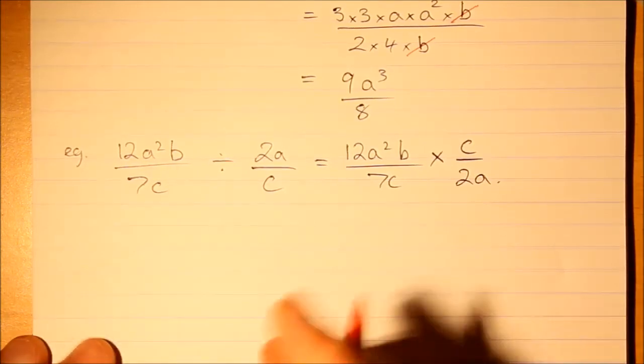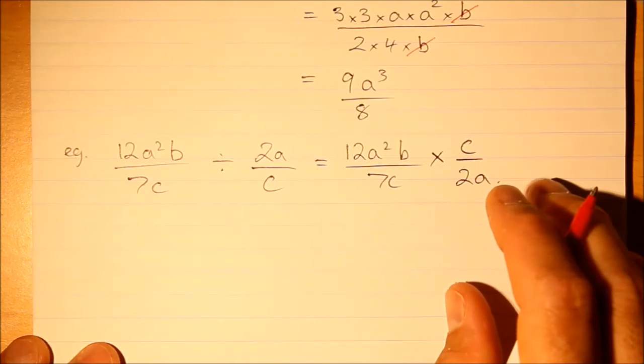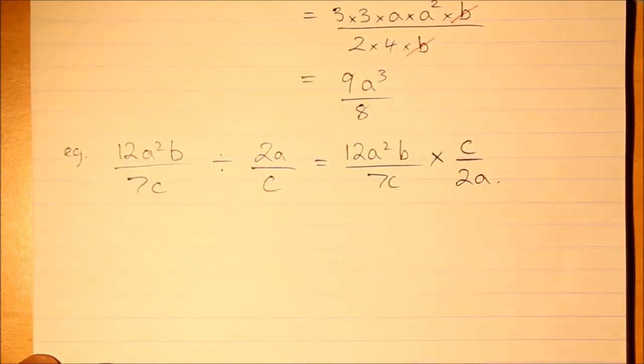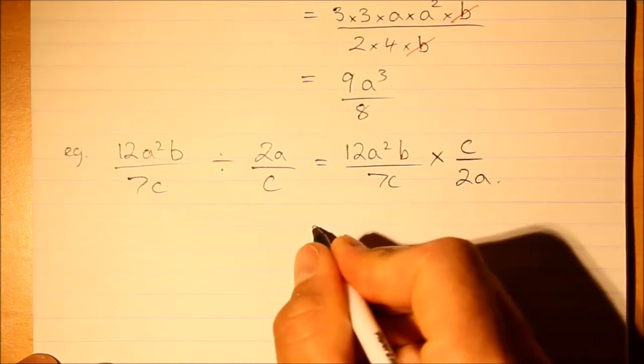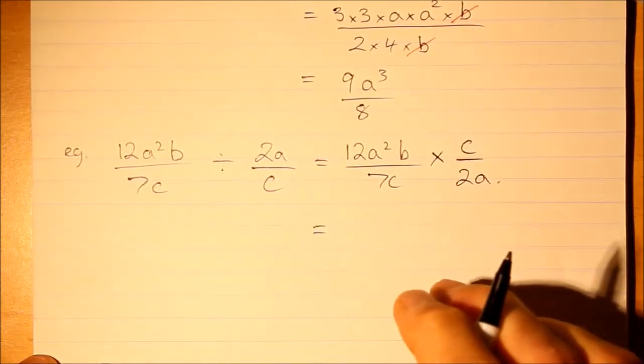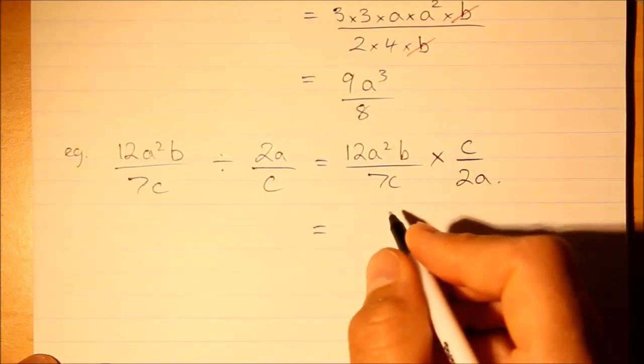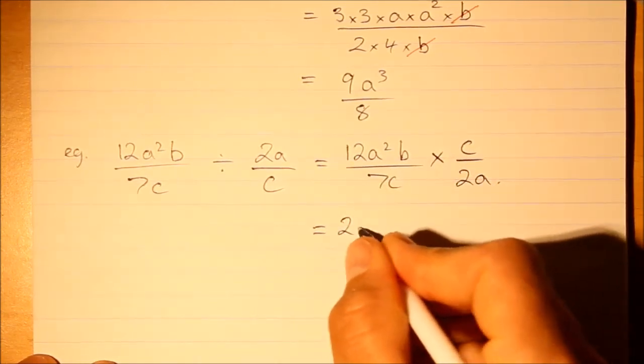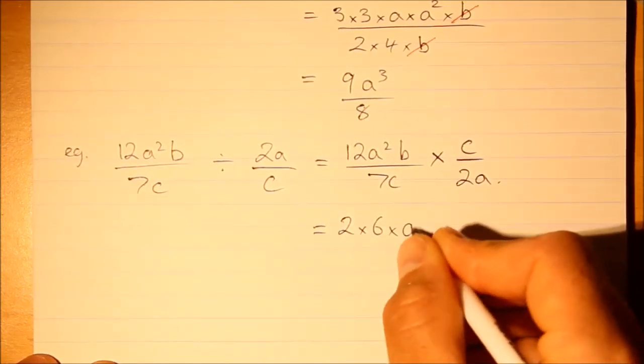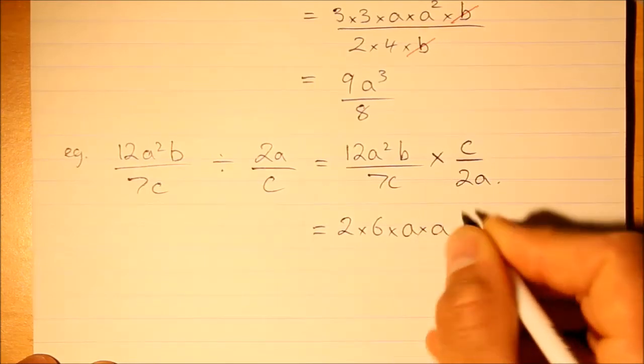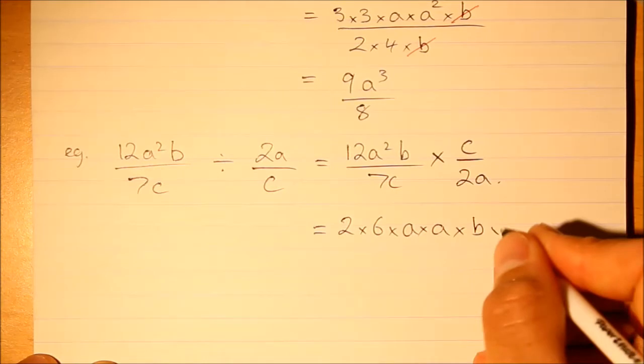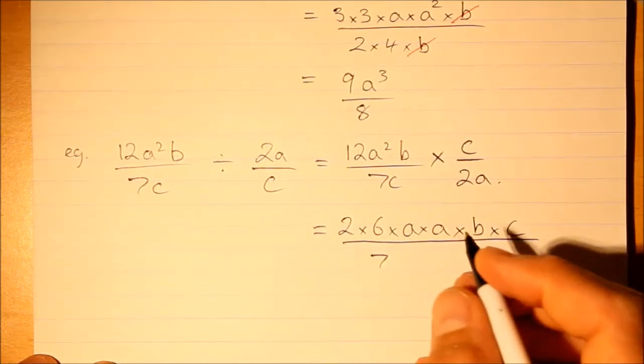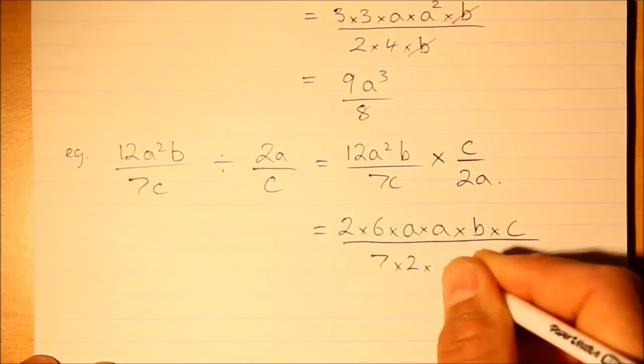Now again, before multiplying, look for common factors if you want to make the number multiplication smaller. What I might do here is, I mean I could start cancelling, but I'm going to write it out just to show you. I'm going to write it in factored form. So 2 times 6 is 12 times a times a times b times c, and 7 times 2 times a times c.